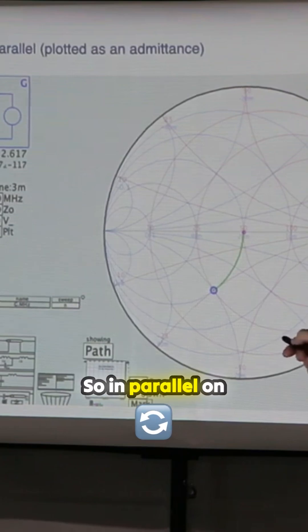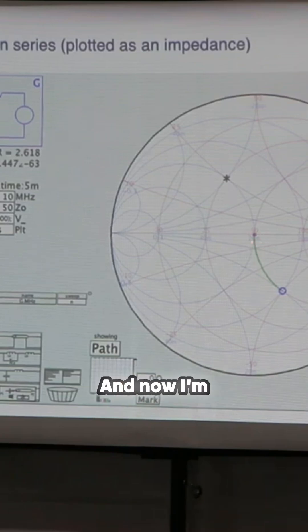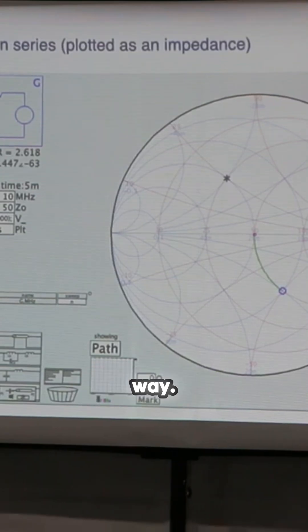So in parallel of my capacitance, I'm now going clockwise around this circle of constant conductance. And here we are in series. And now I'm back on the impedance side and I'm going counterclockwise around the Smith chart this way.